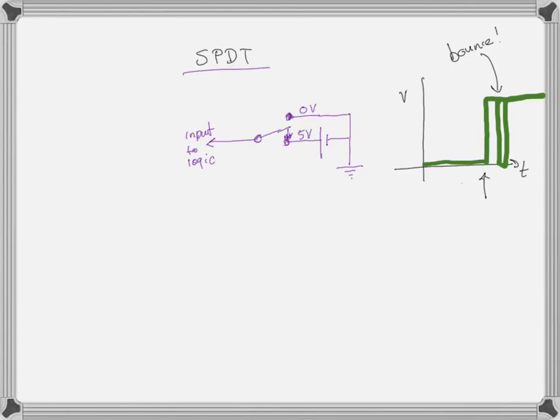We don't like bounce because what it shows to a computer — especially one waiting for a new bit — when the clock strikes as we switch the switch, we're seeing one, zero, one, zero, one before it stays at high. We're sending false bits: it was meant to be just a zero-to-one transition, but instead it was zero, one, zero, one, zero, one. So we have to debounce that switch.